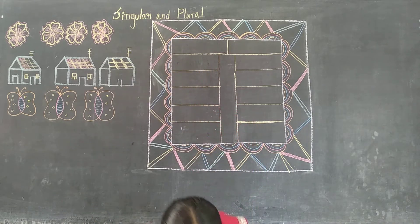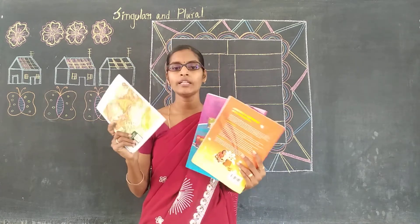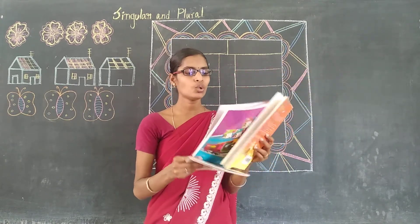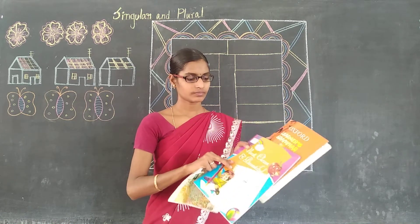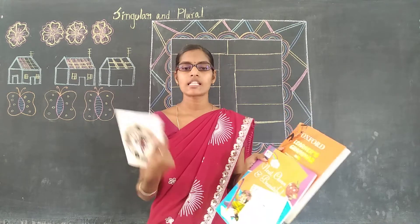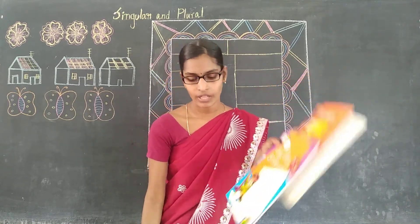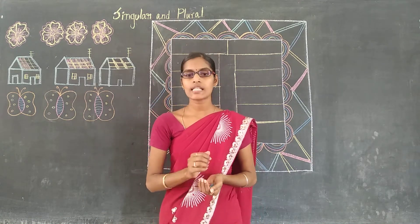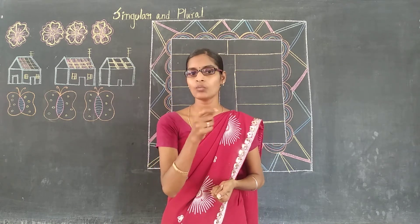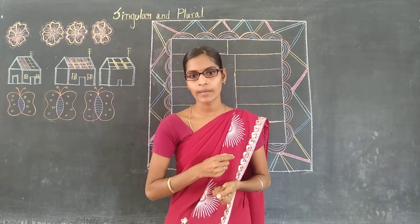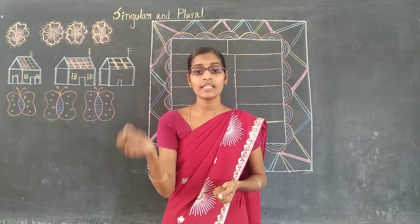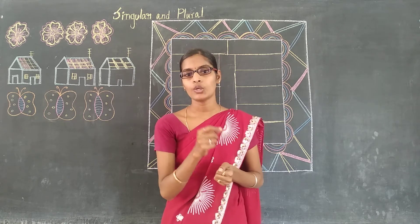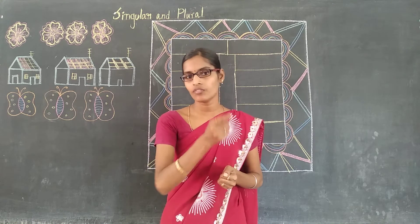Let's have one more example. This is one note, and this is two books. Singular, plural. Are you clear now — what is meant by singular and what is meant by plural? If it is only one thing, it is singular. More than one thing means it is plural. Only one of something — singular. It can be anything. And plural means more than one of the same thing. Something for singular; same thing for plural.